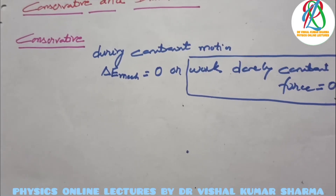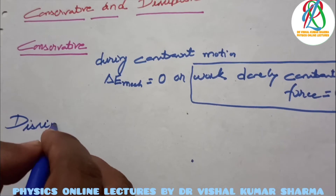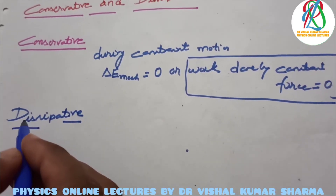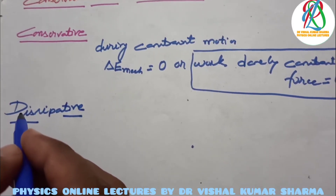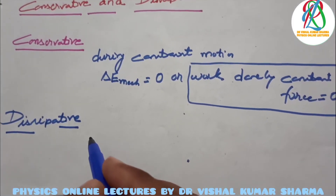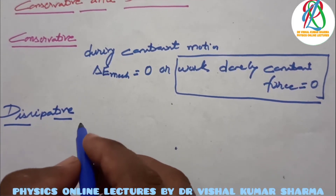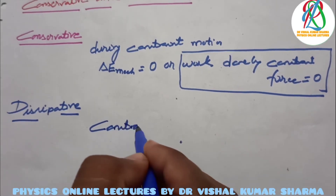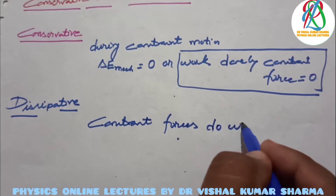On the other hand, when we discuss dissipative constraints, the constraint forces do work — meaning the work done by constraint forces is not equal to zero. That is why there is a fundamental difference between conservative and dissipative constraints.